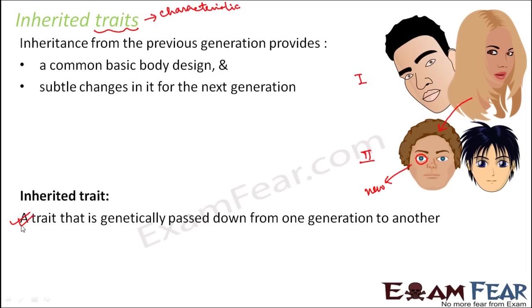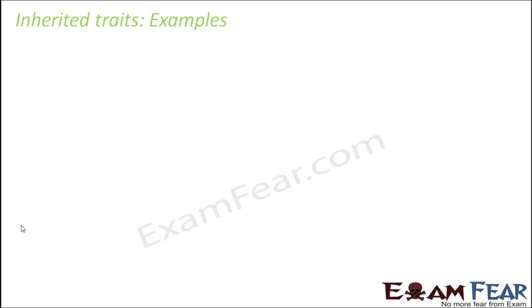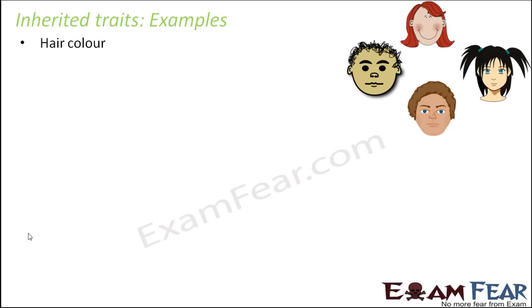Our concern is to understand how these traits are inherited. Some examples of inherited traits: consider hair color — there are so many possible options. It can be black, it can be brown, it can be a reddish-brown, it can be burgundy. So these hair colors can be inherited from your parents.